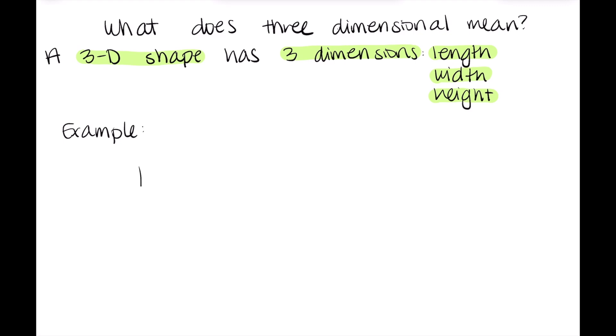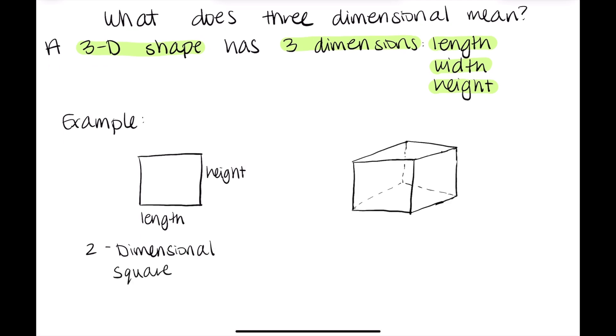Let's also compare 2D to 3D with a visual example. So here is a two-dimensional shape. Notice how it is flat, right? It doesn't have that third dimension and like I said it only has length and height. So this would be classified as a two-dimensional shape and it's just a regular square.